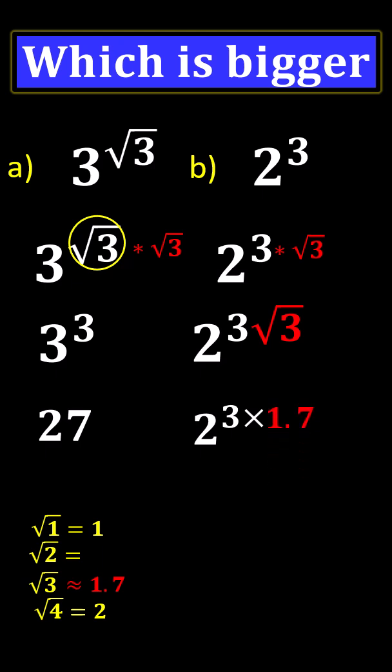So 3 times 1.7 is 5.1, which we can use as 5. 2 to the power of 5 is 32. So therefore, 2 to the power of 3 is bigger.